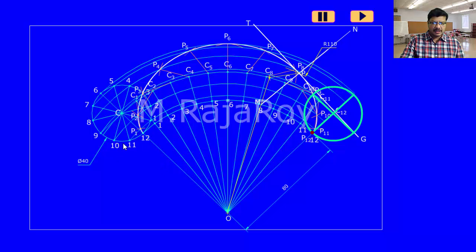Observe this animation to understand how the epicycloid is generated. Epicycloid is generated when a circle is rolling around another circle as shown here. This is the rolling circle or generating circle, and this particular arc is representing the directing circle. This circle will roll, and this point will trace this curve which is the epicycloid.